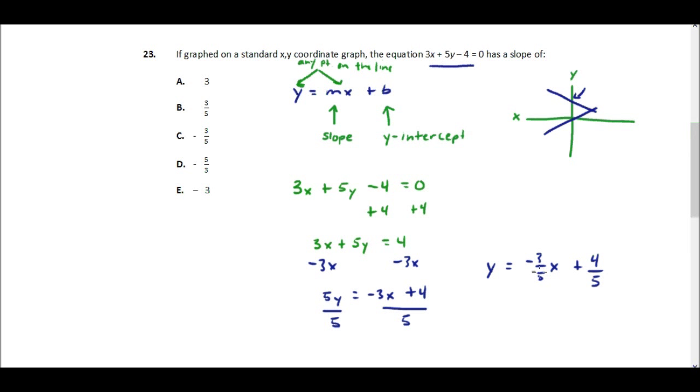So our slope is negative 3 fifths, which is answer choice C. Thank you. Let me keep going.